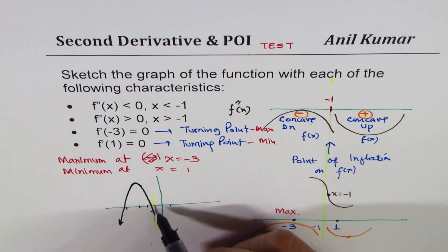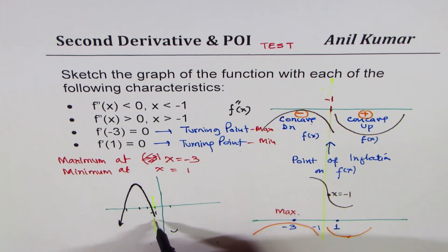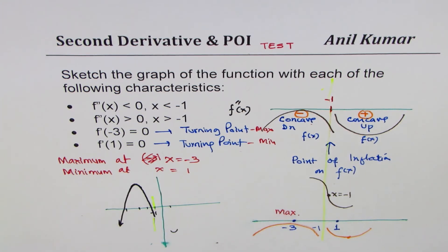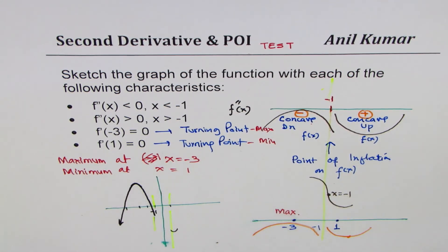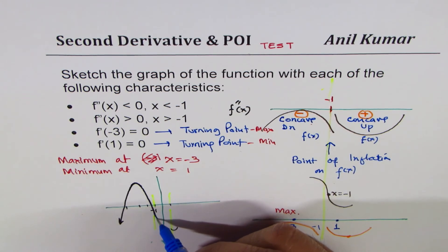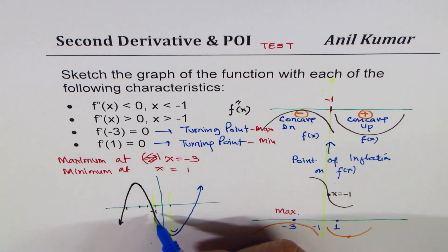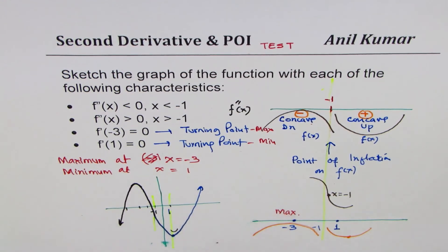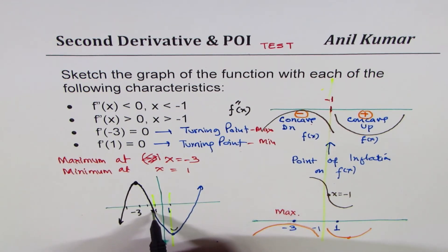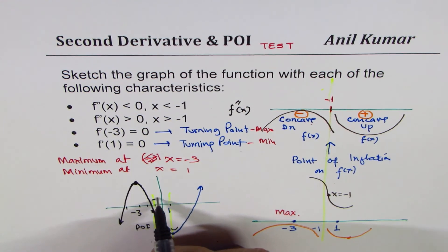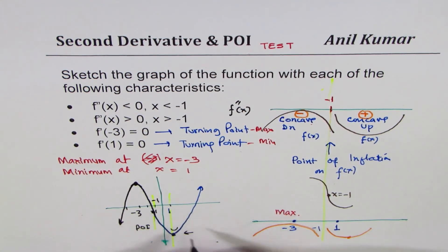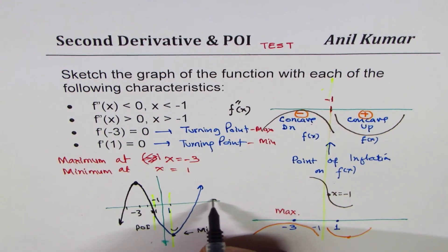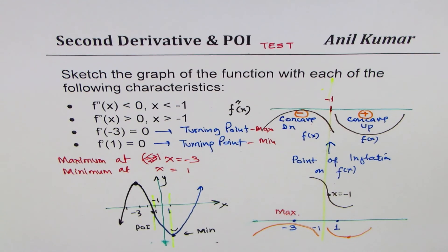At x = -1, the concavity changes — so this is our point of inflection. After minus 1 the graph becomes concave up, eventually reaching a minimum at x = 1. So the complete graph has: a maximum at x = -3, a point of inflection at x = -1, and a minimum at x = 1. That is how you sketch a graph from these conditions.